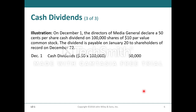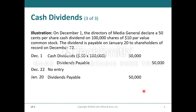Here's the journal entry. Cash dividends at 50 cents times 100,000 shares equals $50,000 as a debit, and you credit dividends payable at $50,000 on December 1st when the board declared the dividend. On December 22nd, when they identified the shareholders, there's no entry to be made. On January 20th, when the payment is made, you debit dividends payable and credit cash.